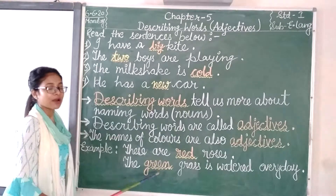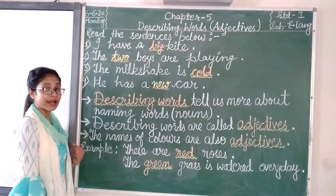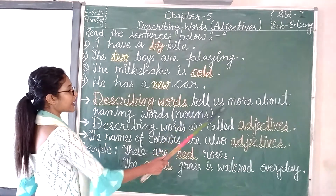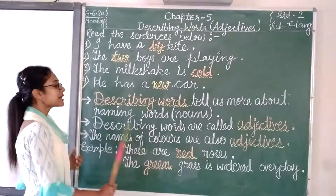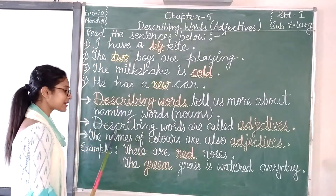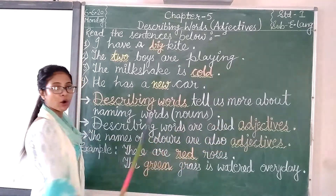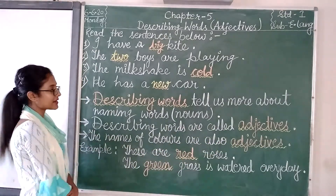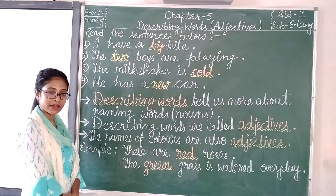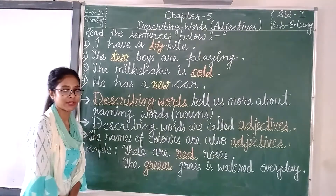Once again children — words that describe nouns and tell us more about naming words are called describing words, and describing words are called Adjectives. Hope you all have understood. I will explain from the book again and give you some exercises. Thank you very much.